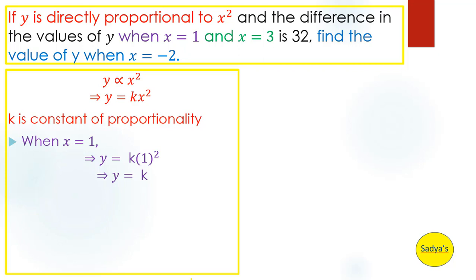Now we find the value of y when x is 3, written in green. We substitute x = 3 into the equation and get y = k times 3 squared. Since 3 squared is 9, y = 9k is the value when x = 3.